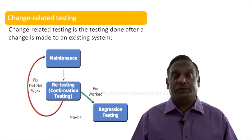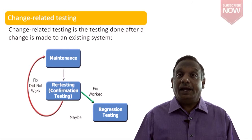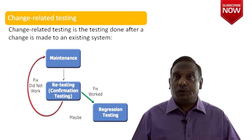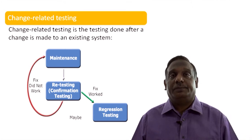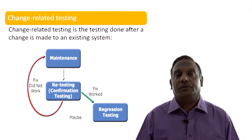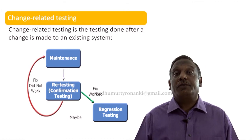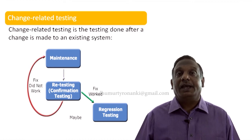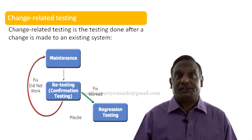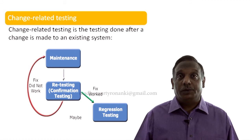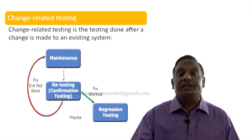Why do we do it? To prove that whatever change we have done to the system is in order. If it is not working, we will change again and do the retesting. But let's say the change is working after you have confirmed it is perfect. Is it enough? It is not enough. After the fix is working, you have to do another type of testing called regression testing. Let us understand a few points about change related testing.